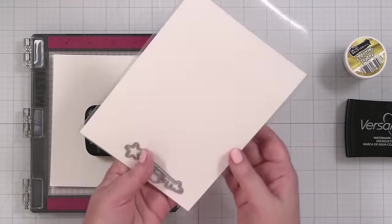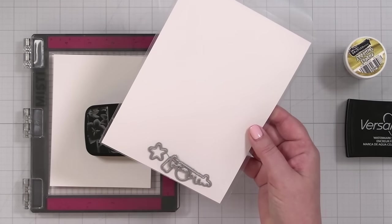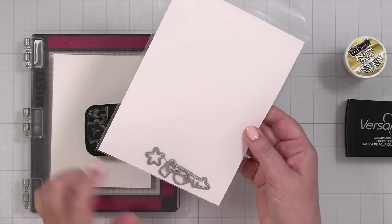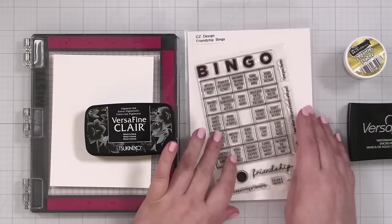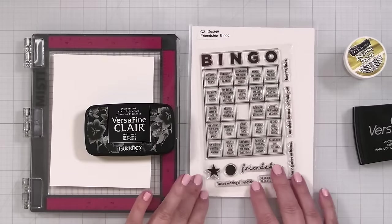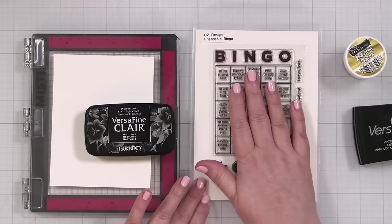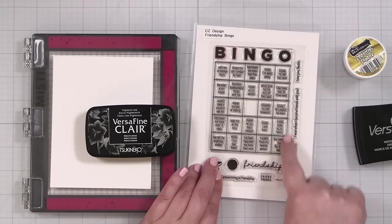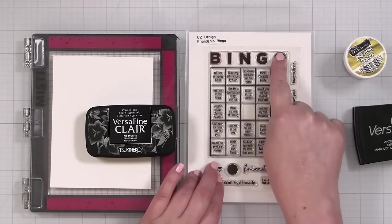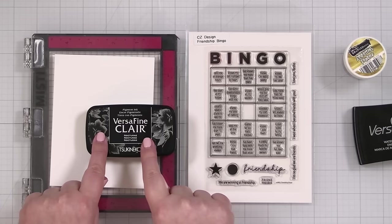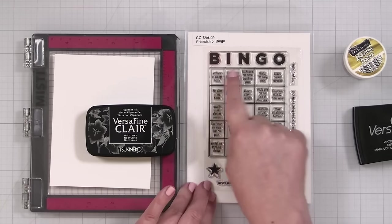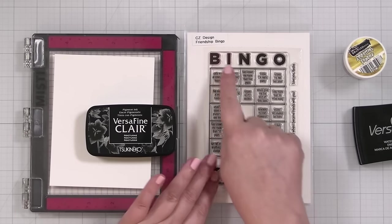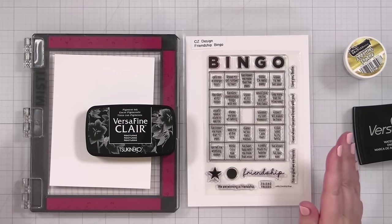There is a really small die set for cutting out the word friendship, for the little bingo pieces, the star in the center. That's an optional add on. But we're going to use this and I'm going to be stamping with VersaFine Clair for the main body and I'm going to emboss the bingo. So we're going to start with this, let this completely dry because it's a pigment ink, and then I'll be embossing the bingo and we'll go from there.